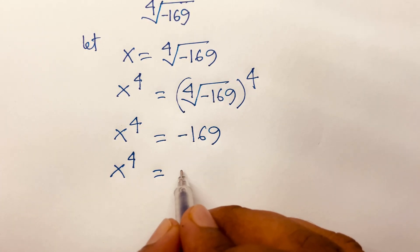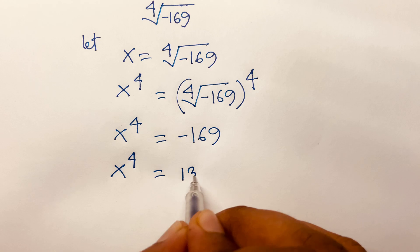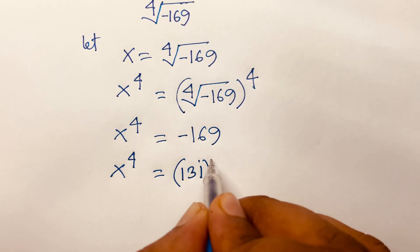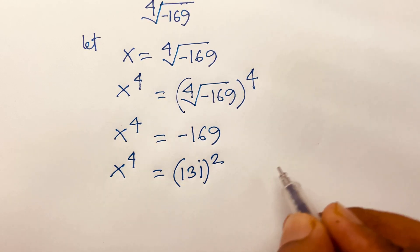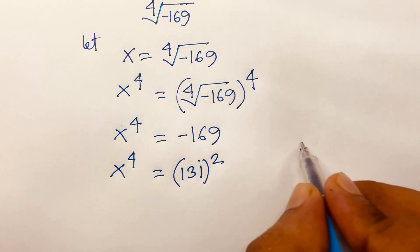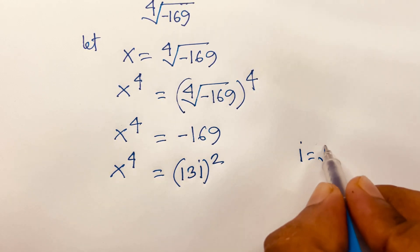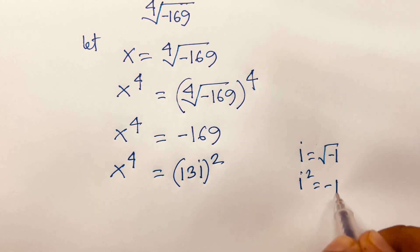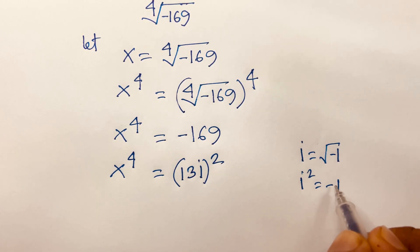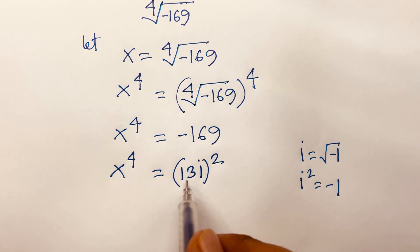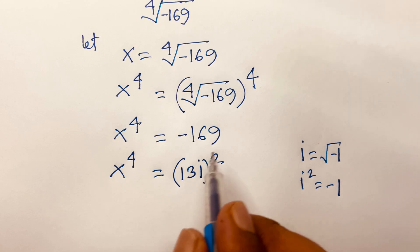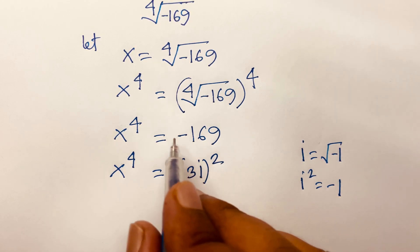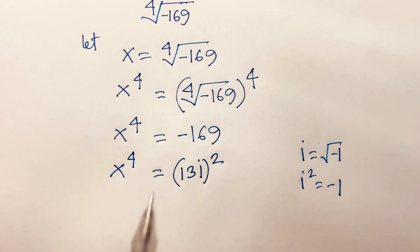It will be 13i squared. We know that i is the square root of minus 1, so i squared equals minus 1. So minus 1 times 13 squared equals 169, which gives us minus 169. So x to the power 4 equals minus 169.